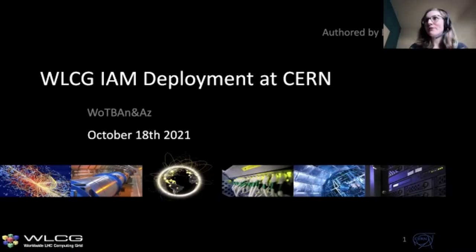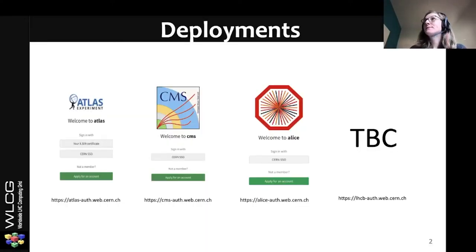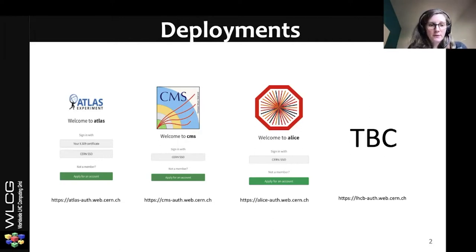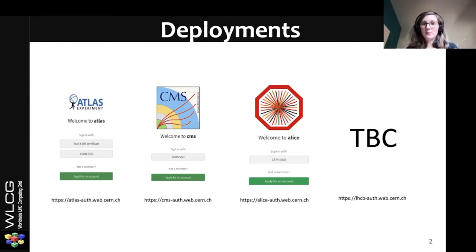I'm back for a five-minute lightning talk about the deployment of WLCG IAM at CERN. So far we have almost four deployments of WLCG IAM — IAM standing for Identity Access Management, developed through the Indigo project with Andrea Ceccanti as the main developer. We have three instances for ATLAS, CMS, and ALICE, with one in progress for LHCb. These have to be deployed at CERN mostly for privacy reasons — otherwise we're not allowed access to VO member validation through the human resources database.